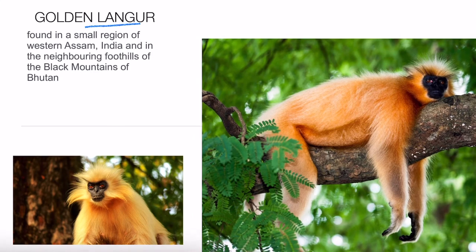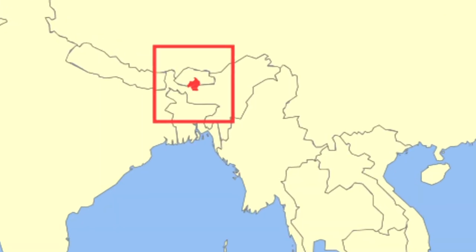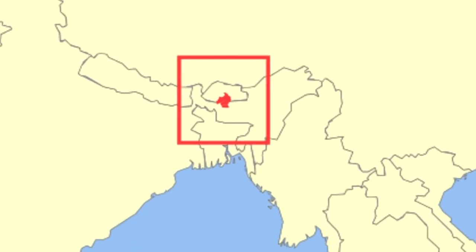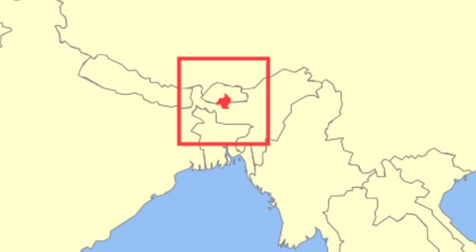The golden langur is found in a very small region — western Assam and the neighboring foothills, specifically the Black Mountains of Bhutan. It is found in India and Bhutan. This is the location of the golden langur — found in small areas in India and Bhutan.